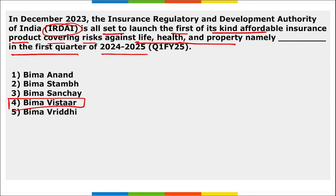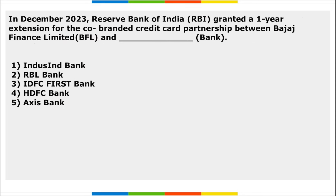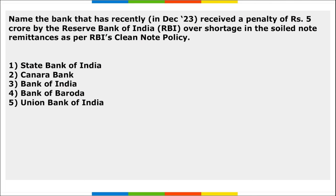Next: RBI granted a one-year extension for the co-branded credit card partnership between Bajaj Finance Limited and RBL Bank. Next: name the bank that recently received a penalty of 5 crore rupees from RBI over a shortage in soiled notes remittances as per RBI's Clean Note Policy. It is Bank of Baroda.